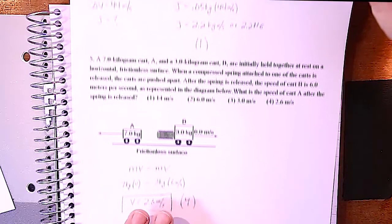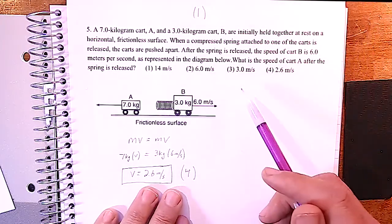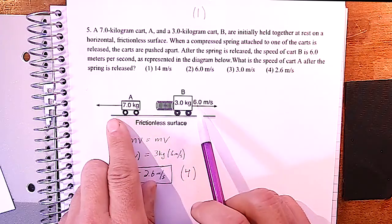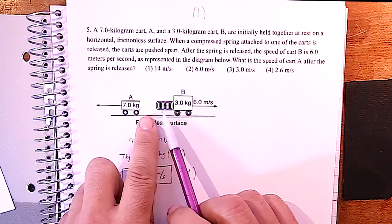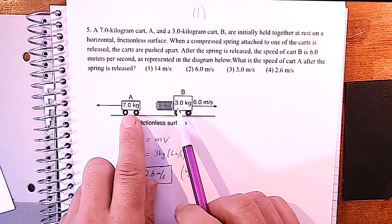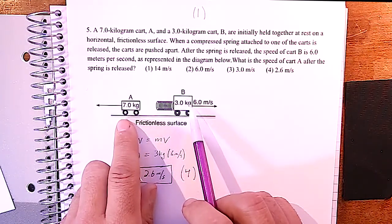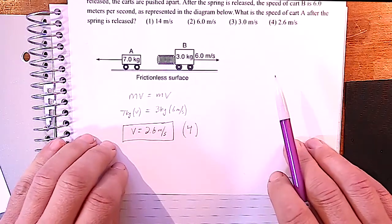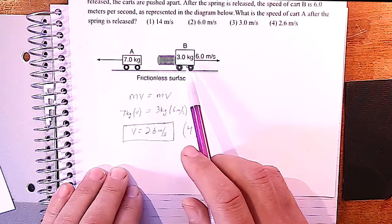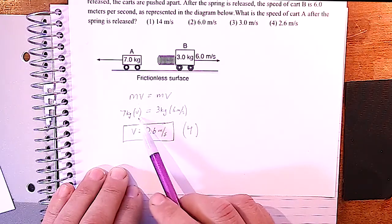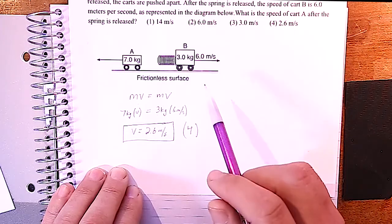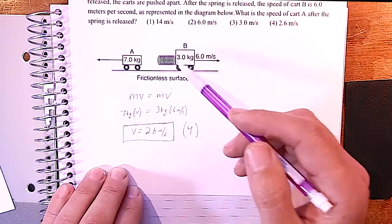Remember, kilogram meters per second is also equal to newton-seconds. In this one I used the shortcut method. We have two carts connected by a spring that shoot apart. The forces are equal and opposite; the accelerations won't be the same — the more massive cart will have a lower acceleration. But the momenta must be equal: 7·v = 3·6, giving us 2.6 meters per second. The direction would be to the left.